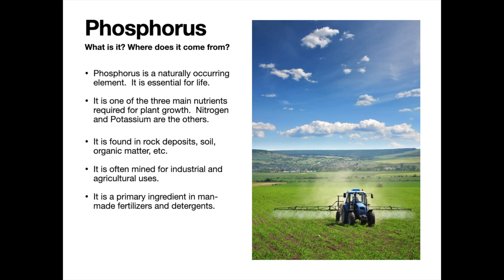Phosphorus is a naturally occurring element. It is found in all living things and widely in our environment. It is a component of life — it's in our DNA, RNA, every living thing. So it's a necessity, but in terms of our discussion on algae, it is also one of the three main nutrients required for plant growth, the others being nitrogen and potassium.